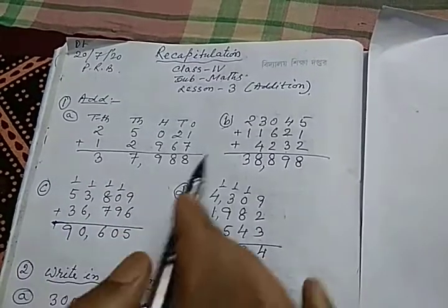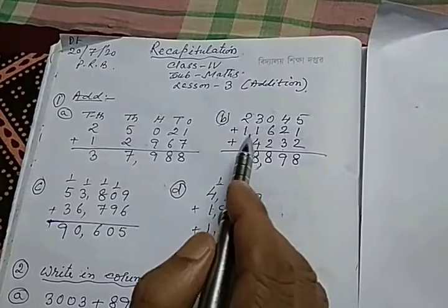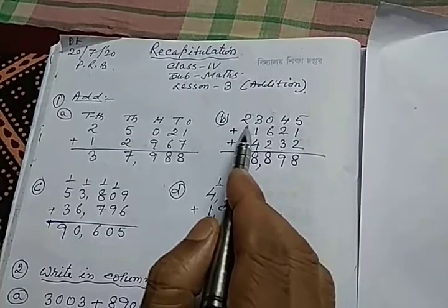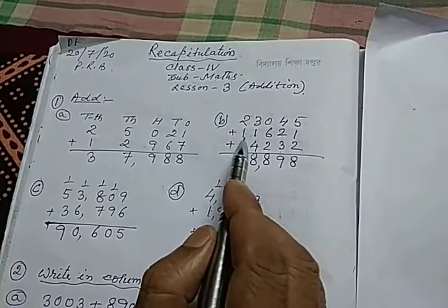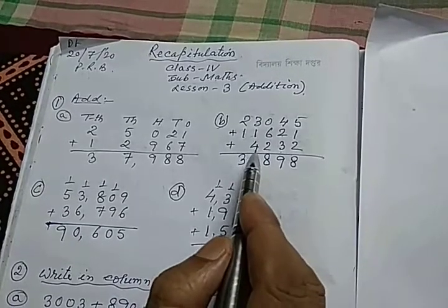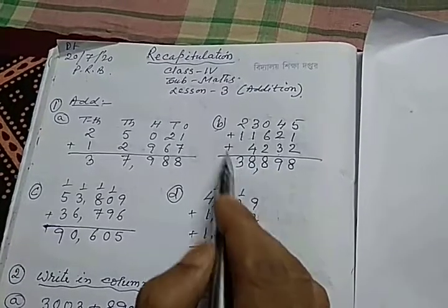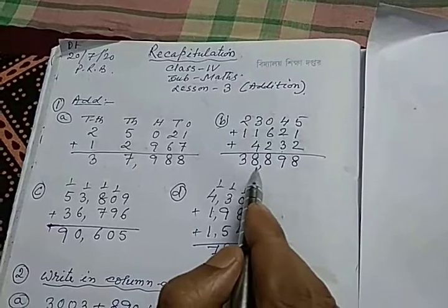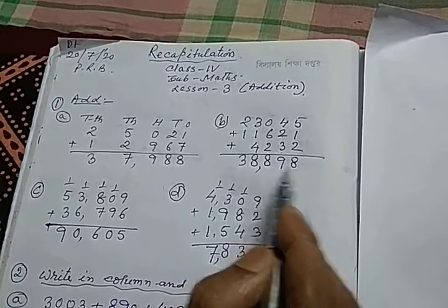In example B, we see that we have three numbers in column. First number is 23,045, second number is 11,621 and the third number is 4,232. After adding these numbers, we have the result 38,898.